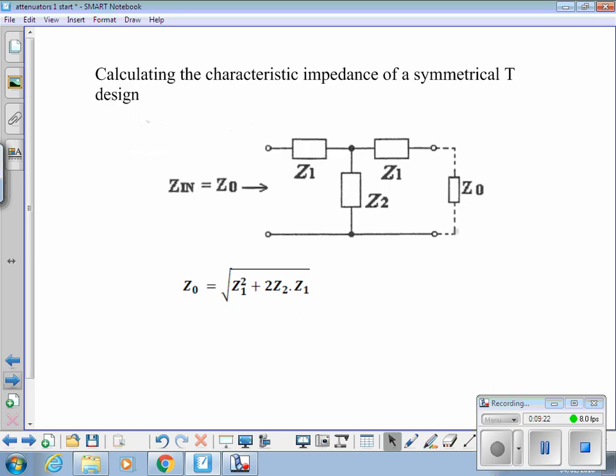We can find the characteristic impedance of a symmetrical T design using that formula. So if we know the values of Z1 and Z2, we can find out what the characteristic impedance of that is, using that formula there. Z0 is equal to the root of Z1 squared plus 2 times Z2 times Z1, we get the characteristic impedance. Now, that's a calculation I would argue that we're generally not going to do, because what you're going to want to be doing is design an attenuator to do a particular job and give you so many decibels of attenuation. Give you the right decibels of attenuation, or cut your voltage in half, whichever way you want to look at it. And be the right input and output impedance.